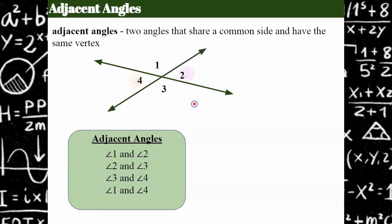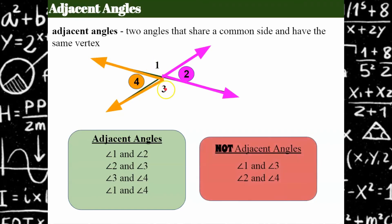The angles in this picture that are not adjacent are angles two and four, and angles one and three. Angle four and angle two share the vertex, but there's nothing in common — I could actually separate those two angles apart. Angles one and three do not have a common ray, so they are opposite each other but not adjacent.